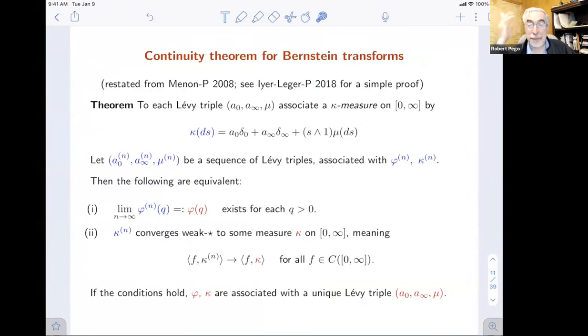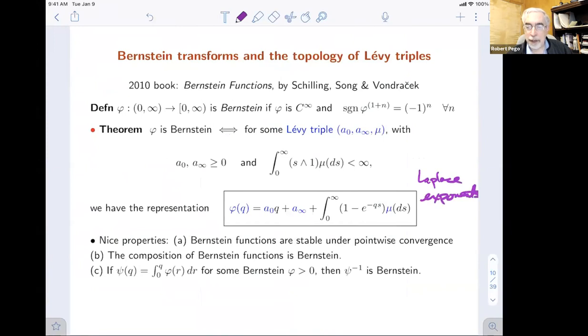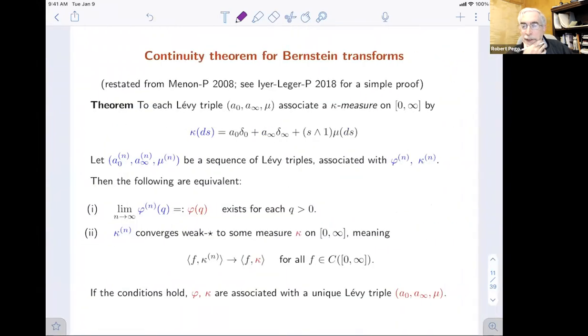So there's some special properties there. It's well worth perusing that book. Something that's not in the book, actually, is a continuity theorem that characterizes the topology of point-wise convergence. These functions, the probabilists call them Laplace exponents. I've seen this topology used in various places, but the characterization, Collet, Menon, and I had found this in a different terminology a dozen years ago. There's a recent proof in the paper with Ayer and Leger.